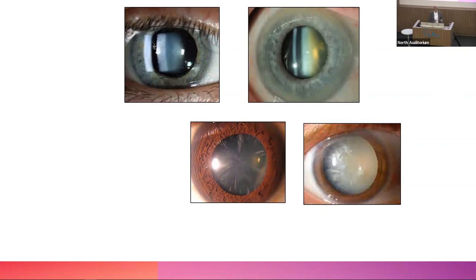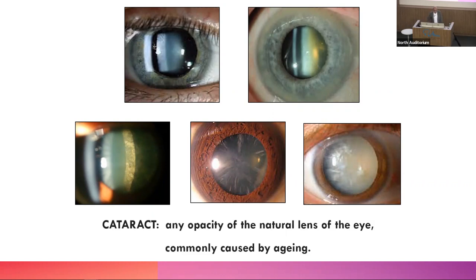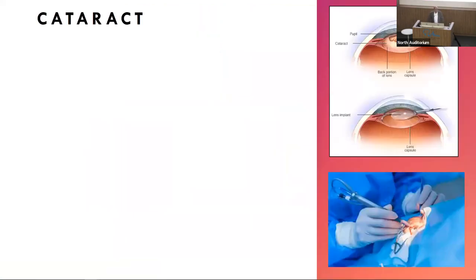Cataract patients can present with general blurriness and/or glare. It doesn't tend to be acute - normally you're talking months to years. Posterior subcapsular cataracts can be brought on quite rapidly by systemic steroid use and by diabetes, which can cause fairly fast development. Cataract is any opacity of the natural lens of the eye, most commonly caused by aging, though there are other causes.